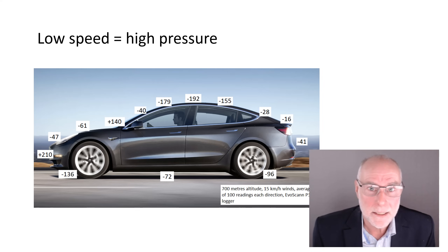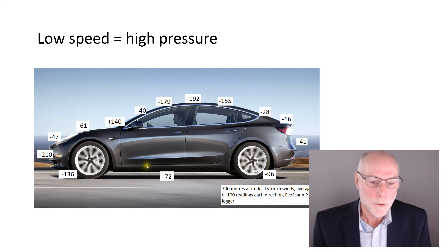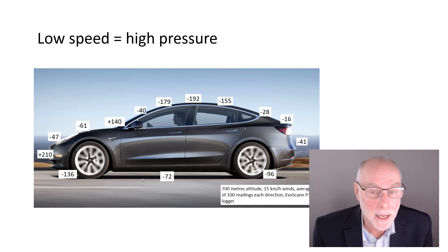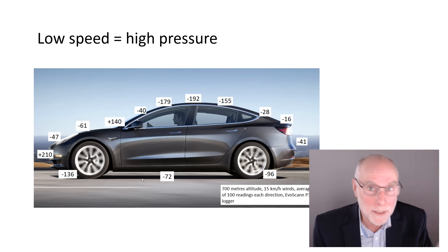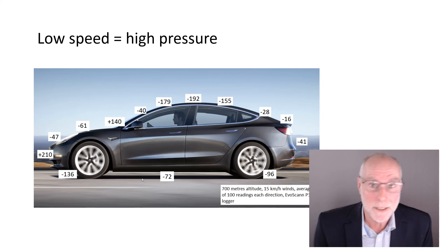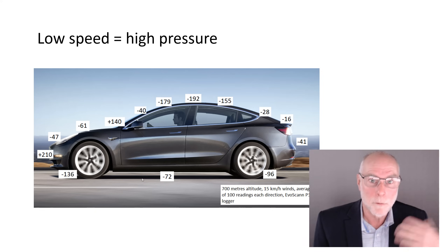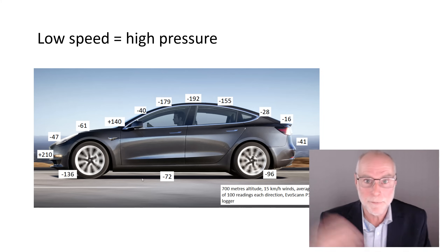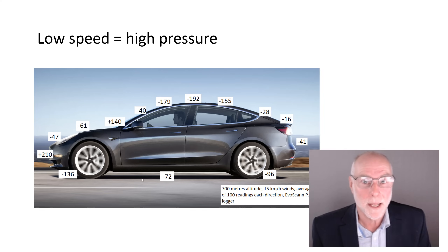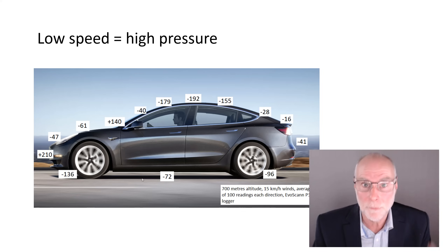Going back to the image of the Model 3: high pressure equals slow flow speeds, low pressure equals high flow speeds. We want high flow speeds under the car because we want low pressures there to help pull the car downwards. We use a smooth undertray with curves in the right position so we can accelerate the flow — a diffuser in other words. If it's all rough with exhaust and suspension bits hanging down, we won't get that high speed flow, so we won't get the low pressures.